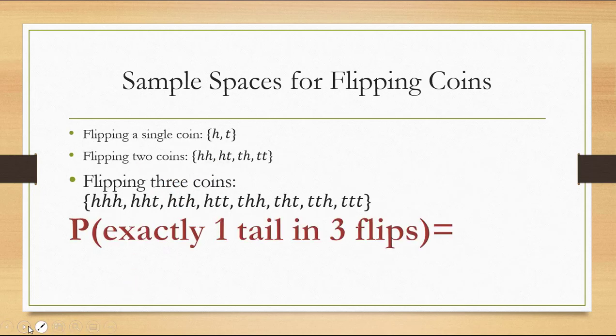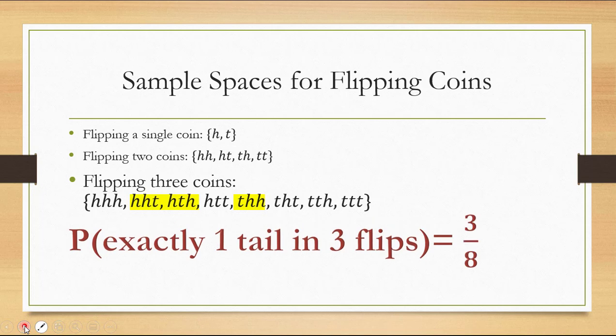So let's look at how we would use this sample space for three flips. We can find, for example, the probability of exactly one tail in three flips. Where do we see one tail? There's heads-heads-tails, heads-tails-heads, and tails-heads-heads. Those are the only three outcomes that have exactly one tail. So there are three favorable outcomes out of the eight possibilities in the whole sample space.